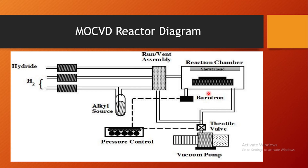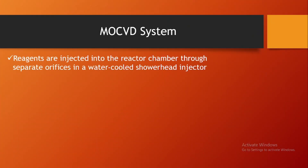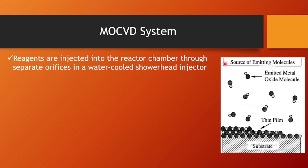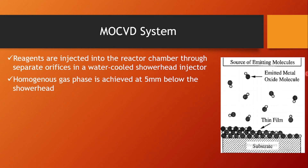Within the MOCVD reaction chamber, reagents are injected through separate orifices in a water-cooled shower head injector to create a very uniform distribution of reagent gases. The shower head acts as an injector of target atoms or molecules through orifices — holes that maintain uniform distribution of reagent gases into the reaction chamber. A homogeneous gas phase is achieved at a distance of approximately 5 mm just below the shower head.